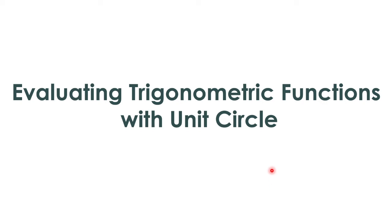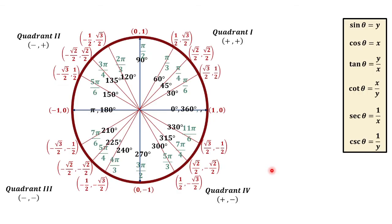Evaluating trigonometric functions with the unit circle. In reference to our unit circle, we can see that sine theta is equal to y and cosine theta is equal to x. So these coordinates give us the intersection of the angles in standard position with our unit circle.